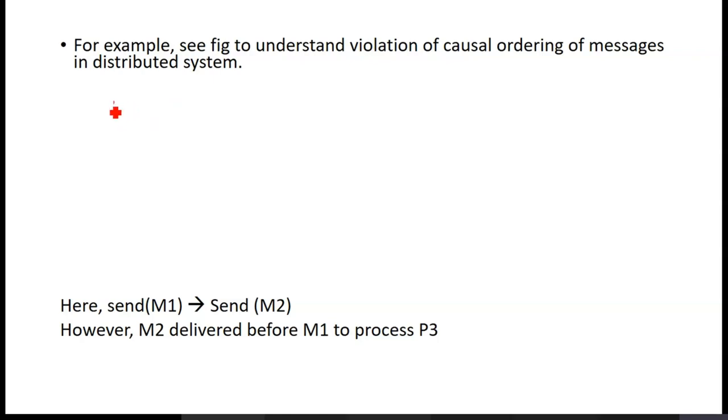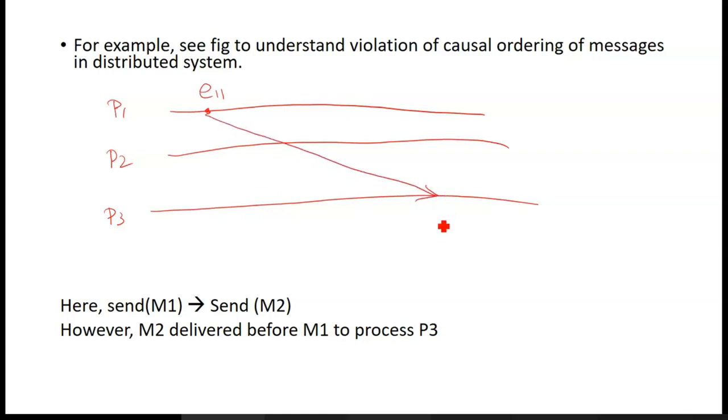Here I have process P1, I have process P2 and P3. Now, P1, P2, P3 amongst these three processes, now P1 initiates an event E11 which sends a message to P3. This is message 1. Meanwhile, after some time P1 sends another message to P2. Then P2 sends a message to P3. So there are three messages: this is the first message, and this is the second message, and this is the third message.